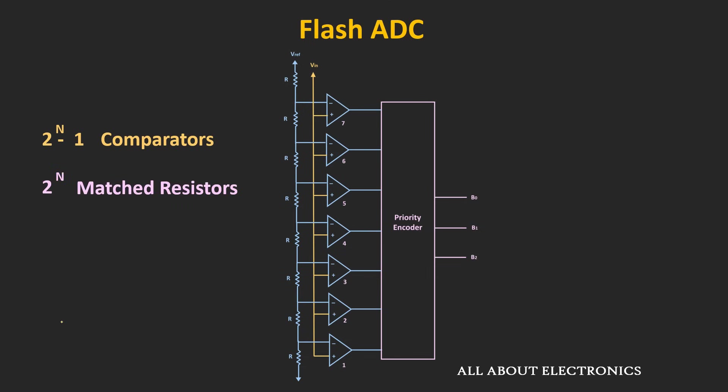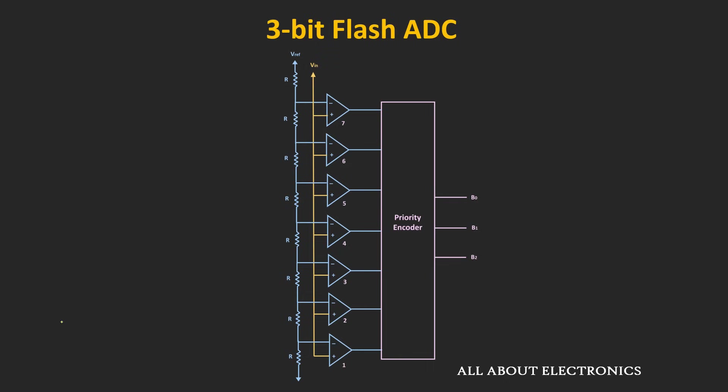To understand the working, we will take the example of a 3-bit Flash ADC. This 3-bit Flash ADC consists of 7 comparators, and the voltage divider circuit consists of 8 resistors.